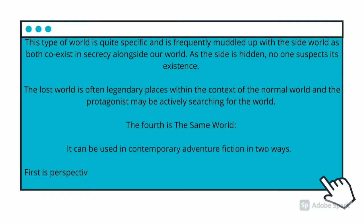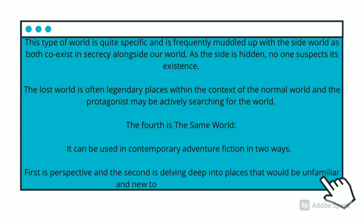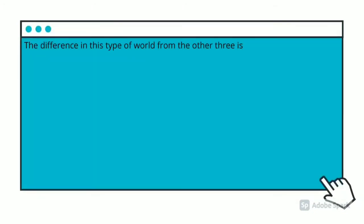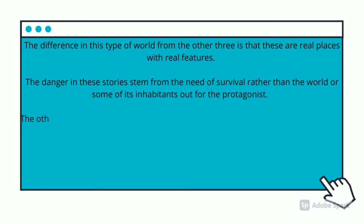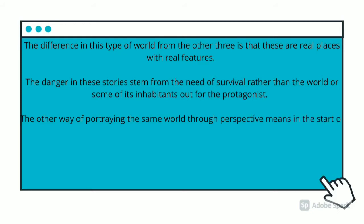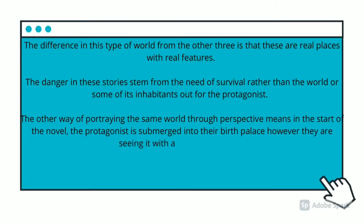The fourth type is the same world. It can be used in contemporary adventure fiction in two ways: first through perspective, and second by delving deep into places that would be unfamiliar. The difference in this type of world from the other three is that these are real places with real features. The danger in this story stems from the need of survival rather than from the world or its inhabitants threatening the protagonist.